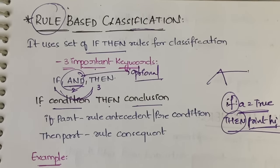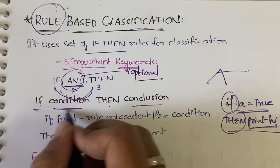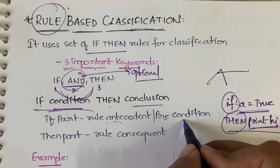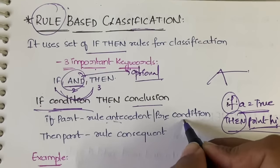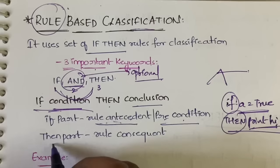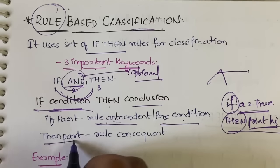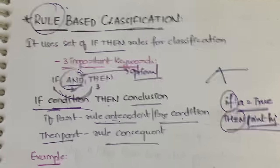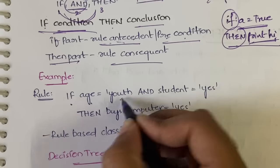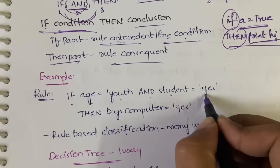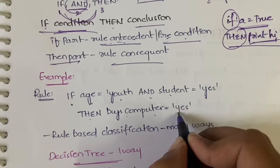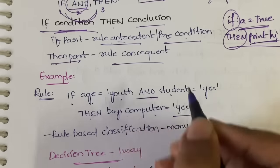The 'if' part is called the rule antecedent or precondition, and the 'then' part is called the rule consequent. For example: if age is equal to youth AND student is equal to yes, then buys_computer is equal to yes. We have 'and' here because there are two conditions.